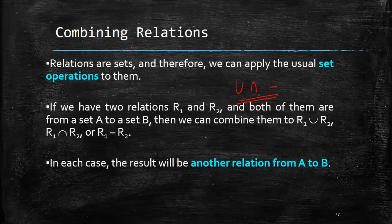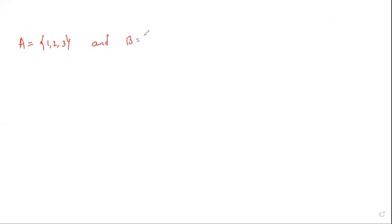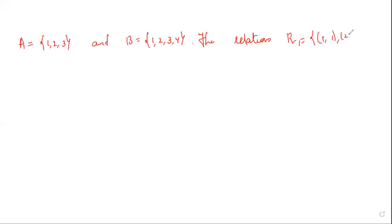In each case, the result will be another relation from A to B. Let's see an example. Assume that we have sets A = {1, 2, 3} and B = {1, 2, 3, 4}. On these two sets we have the relations R1 = {(1,1), (2,2), (3,3)} and R2 = {(1,1), (1,2), (1,3), (1,4)}.